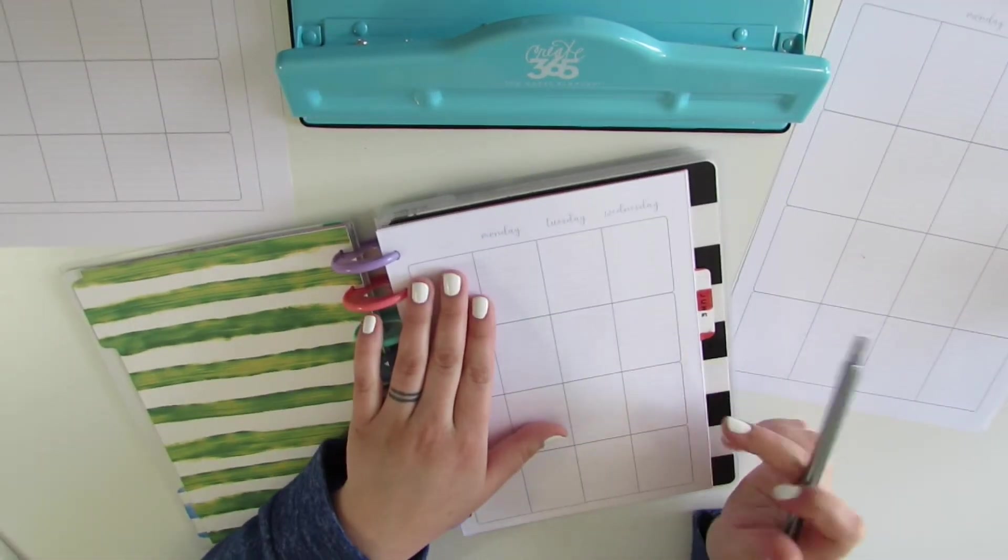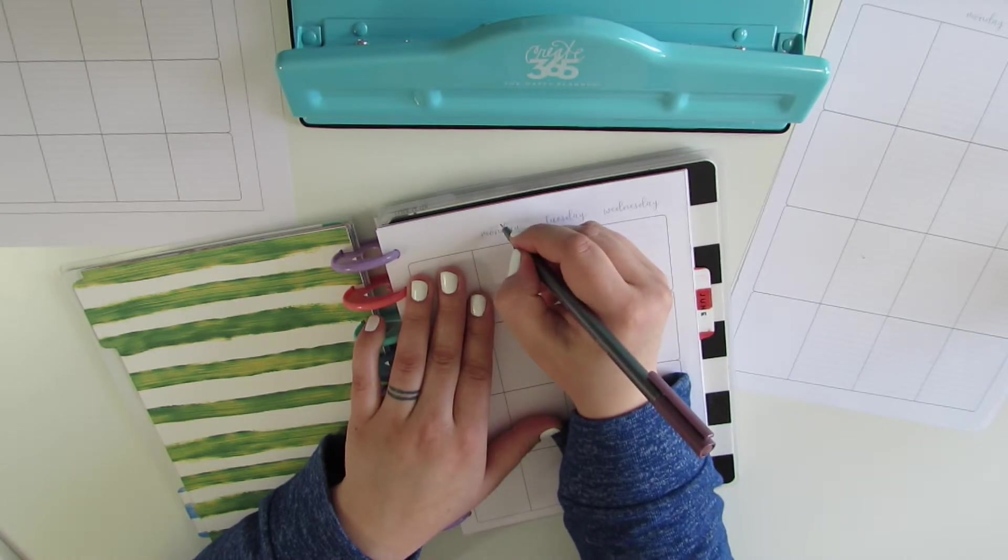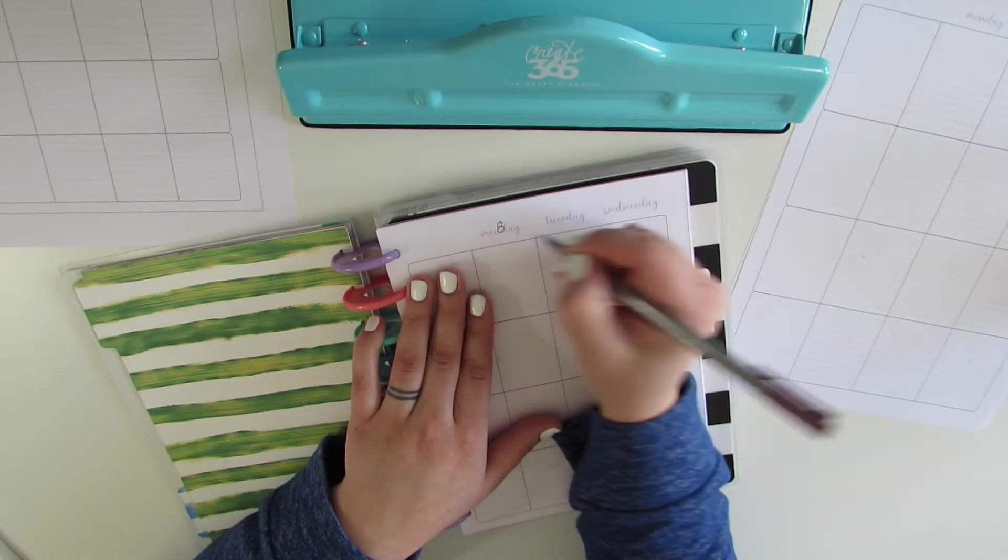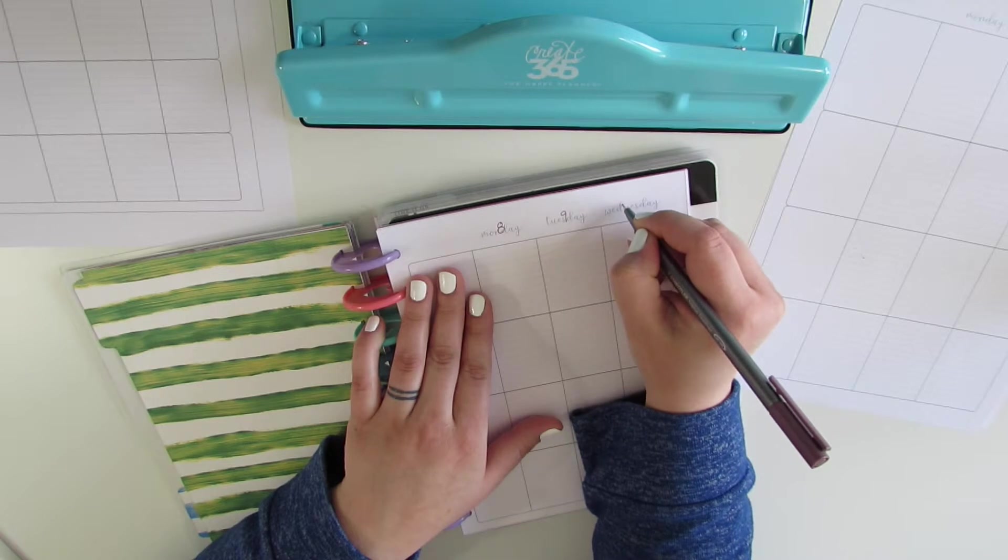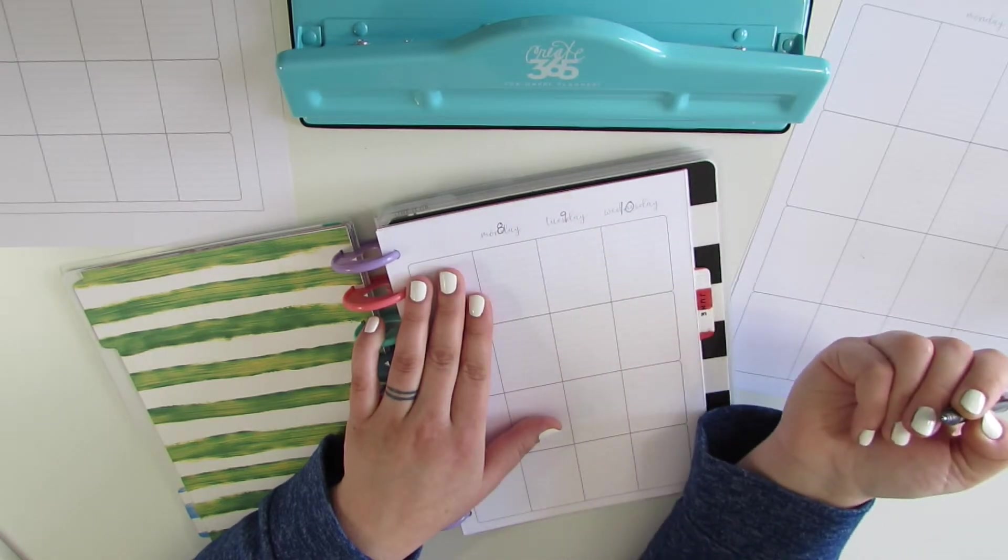So what's the date today? I think yesterday was the 8th. So you can easily just write an 8 and a 9 and a 10 over it and just have your days of the week out that way.